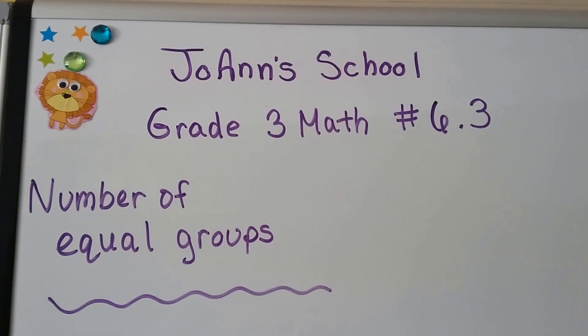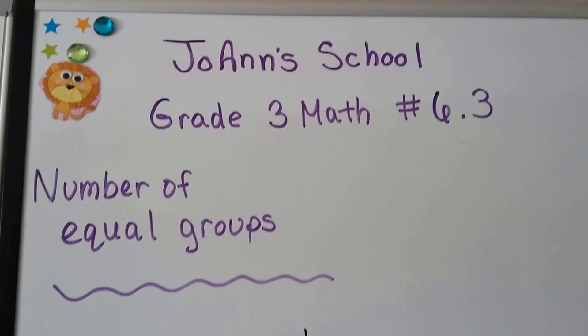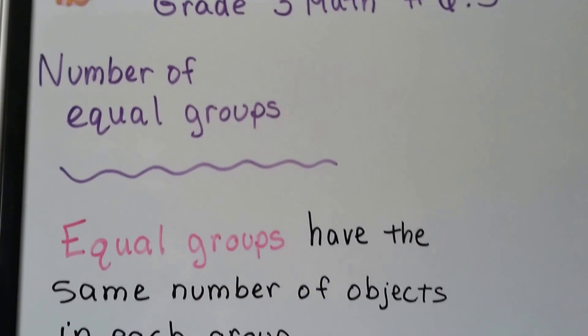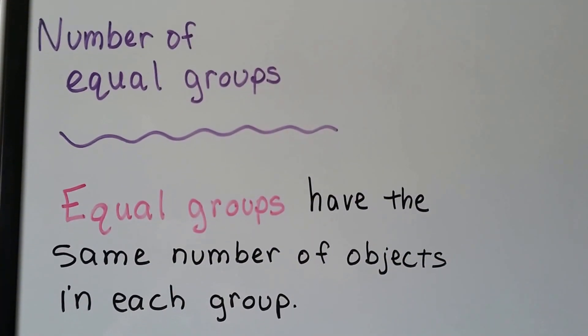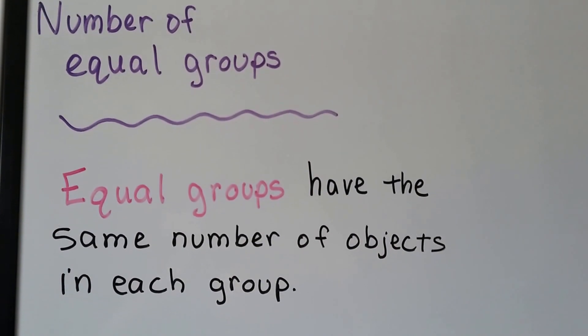Grade 3 math number 6.3, number of equal groups. Equal groups have the same number of objects in each group. They're equal.